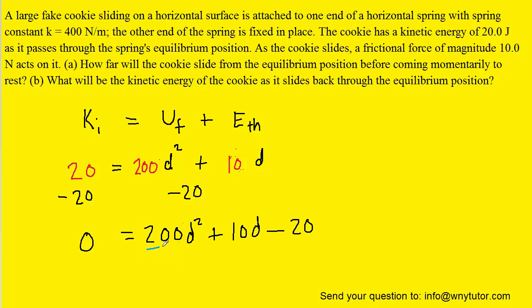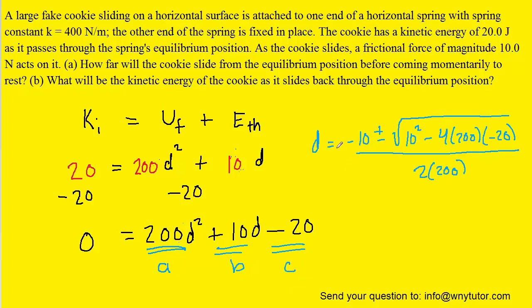The resulting quadratic equation can be solved by using the quadratic formula. In that case, we'll have an a of positive 200, the b will be positive 10, and c will be negative 20. So we've set up the quadratic formula here. When you solve that, you get a positive root of 0.292 meters. We can reject the negative root, and so this becomes the correct value for d, which is how far the cookie will slide from its equilibrium position before momentarily coming to rest.